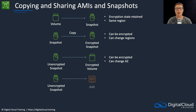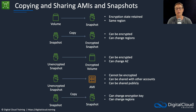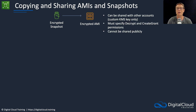You can take an unencrypted snapshot and create an AMI — but you can't encrypt the AMI directly. You'd first need to copy the snapshot, create an encrypted snapshot, and then create an AMI. That AMI can be shared with other accounts and publicly. You can also copy a snapshot to another snapshot, changing the encryption key and region. You can take an encrypted snapshot and create an encrypted AMI, which can be shared with other accounts only if you're using a custom KMS key, and you must specify decrypt and create-grant permissions on that key. An encrypted AMI cannot be shared publicly.